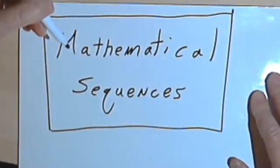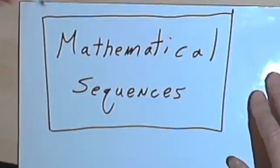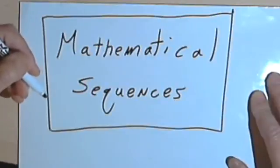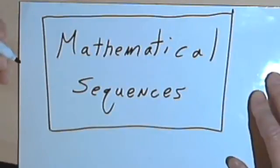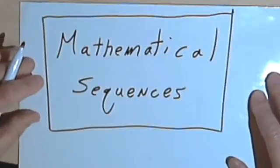This video is going to be an introduction to mathematical sequences. So let's get a general idea of what a sequence is. Basically, in math, a sequence is a list of items, very often numbers, and the list has a specific order.